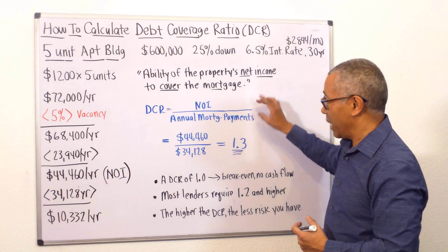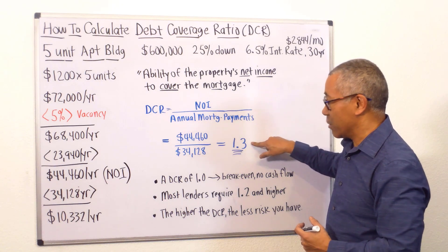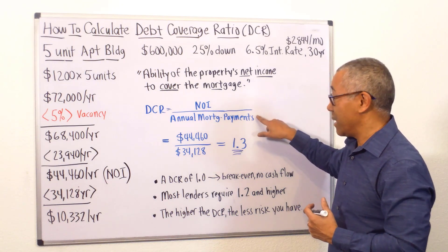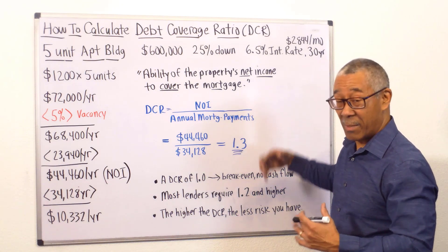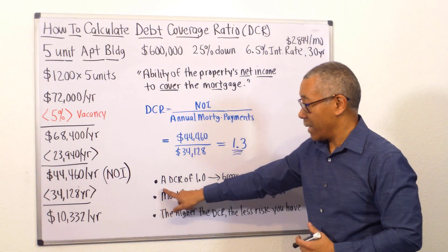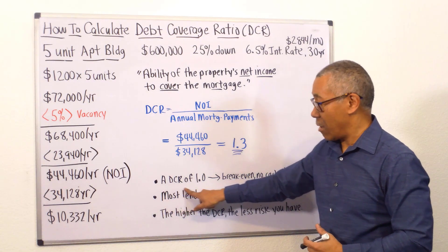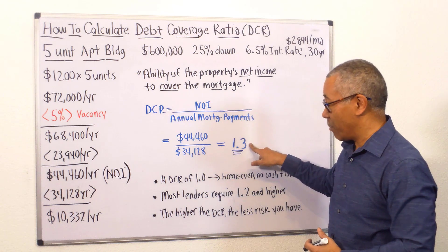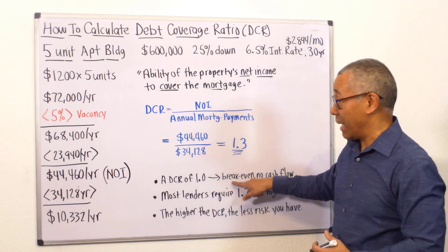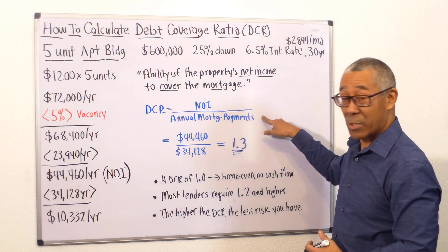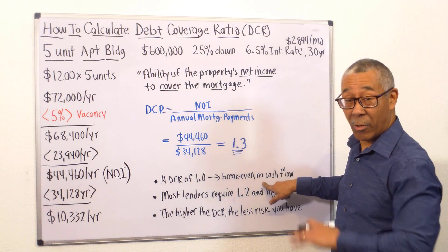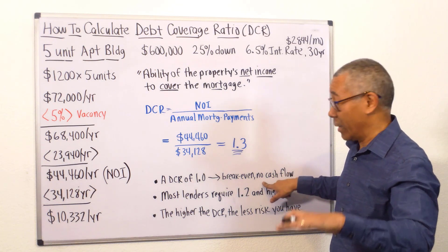That equals 1.3. Your NOI is 1.3 times higher than your mortgage, which means you're positive cash flow. Now, if DCR is 1.0, that means you're breaking even — your NOI and mortgage payments are equal, you have no cash flow. That's not good.